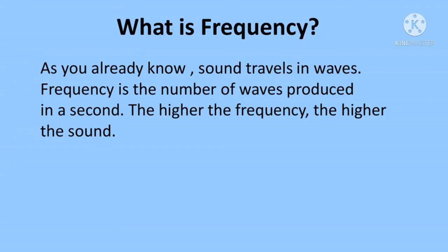Frequency describes the number of waves that pass a fixed place in a given amount of time. If the time it takes for a wave to pass is half a second, the frequency is 2 per second. If it takes one-hundredth of an hour, the frequency is 100 per hour. In the most general sense, frequency is defined as the number of times an event occurs per unit of time in physics.